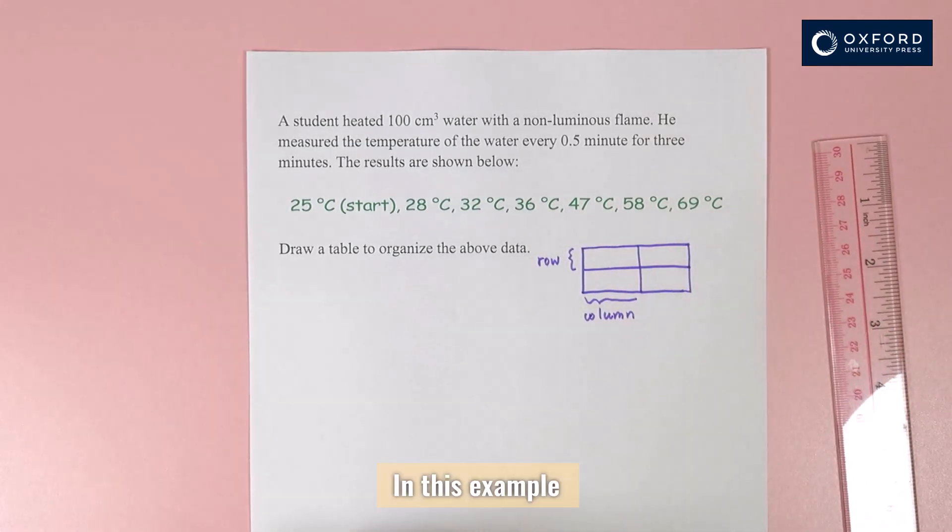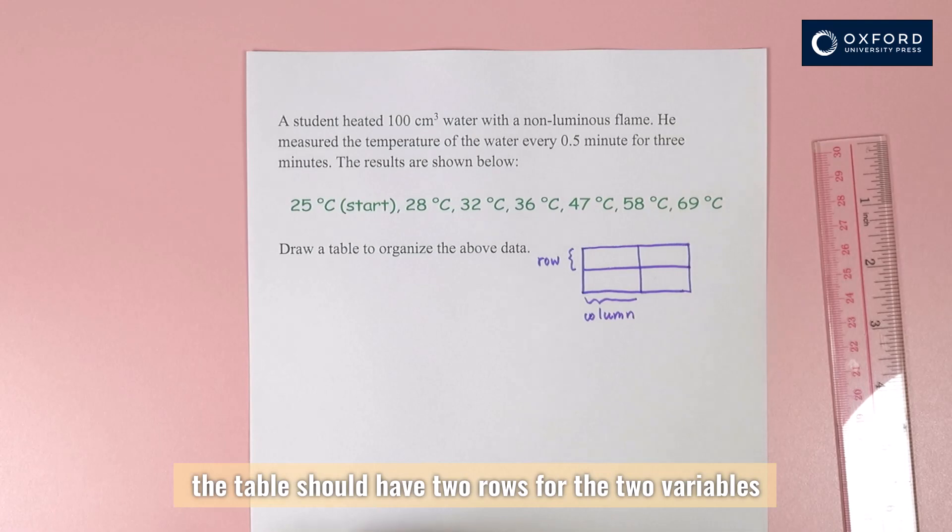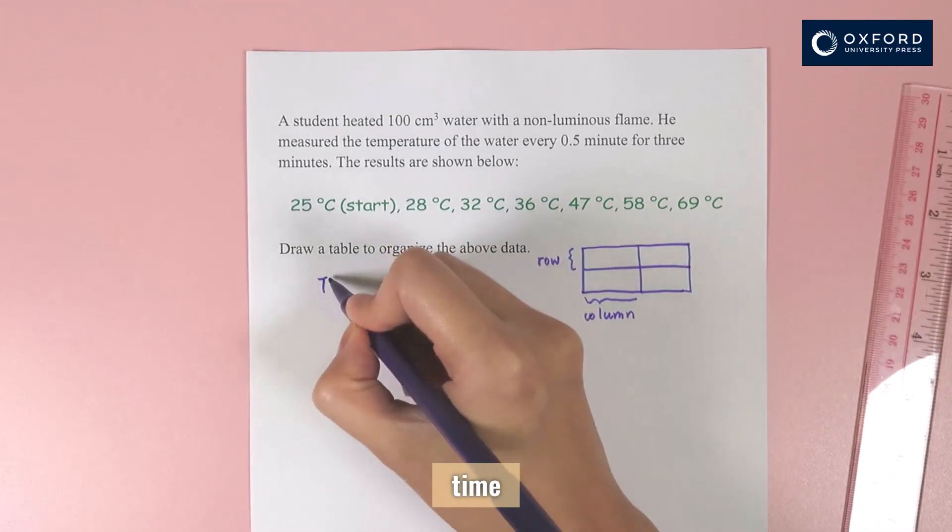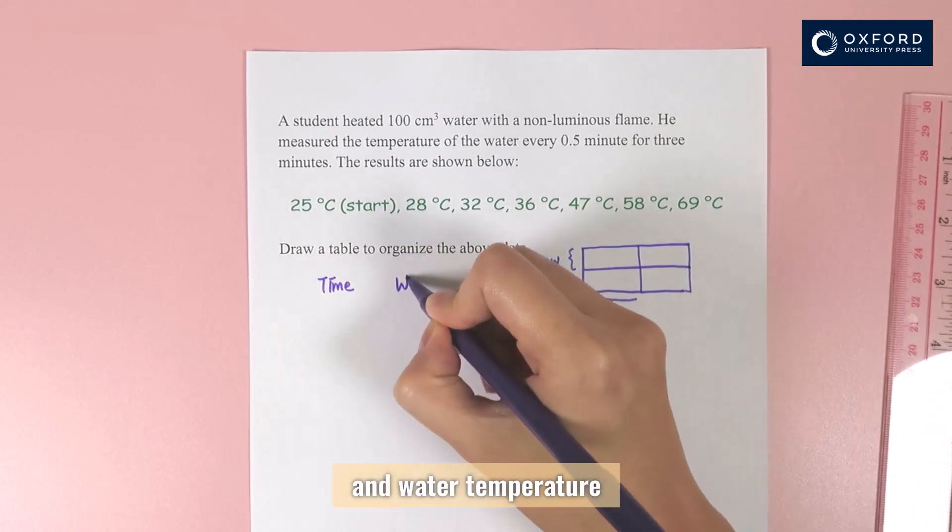In this example, the table should have two rows for the two variables: time and water temperature.